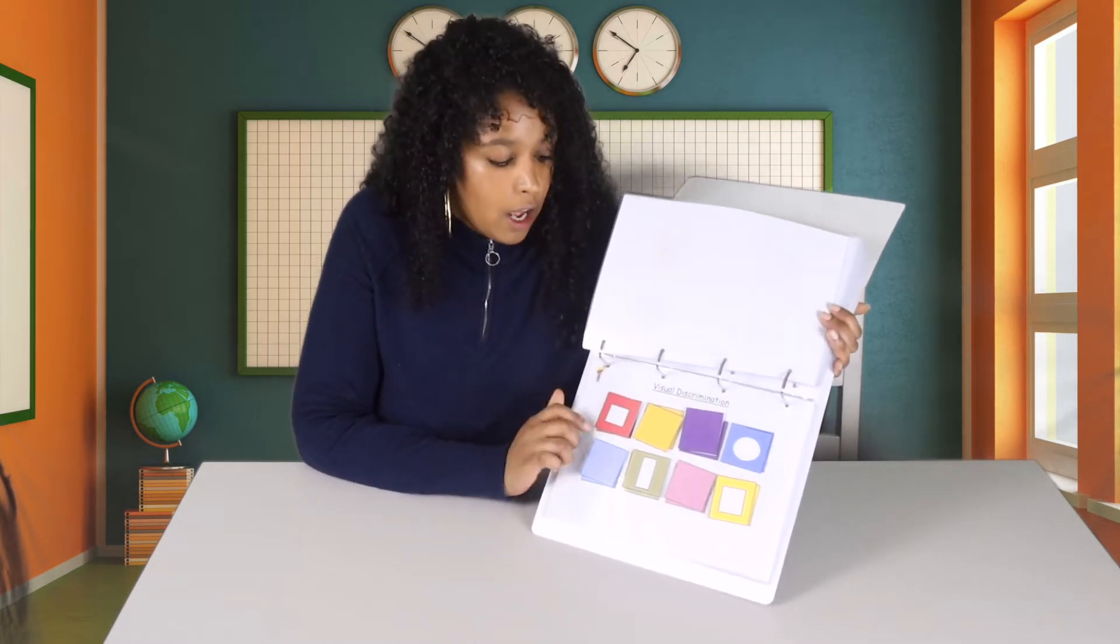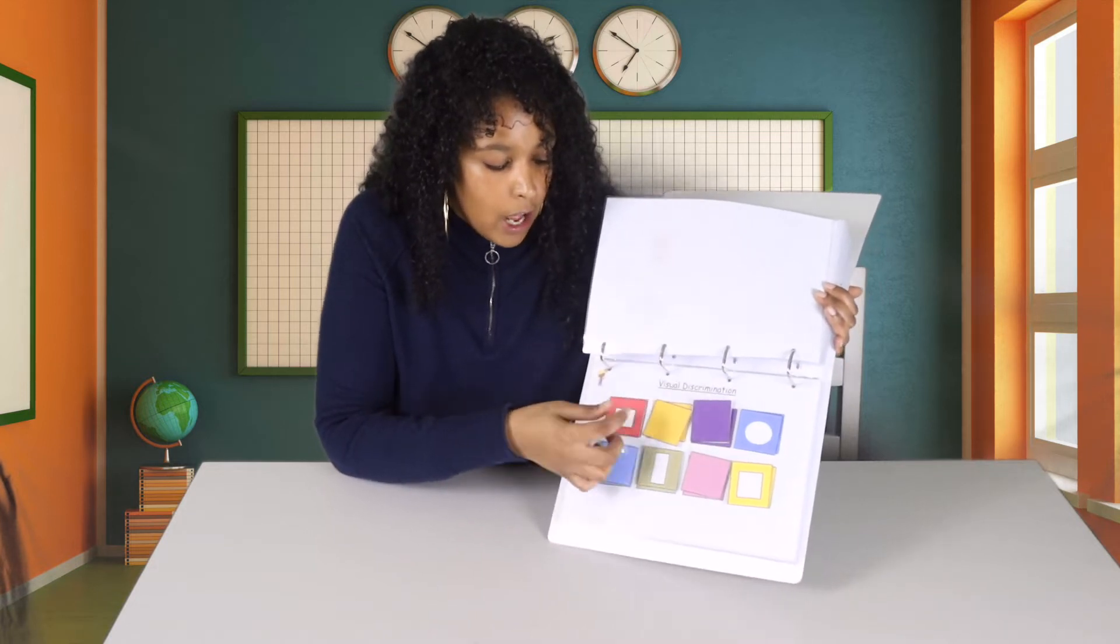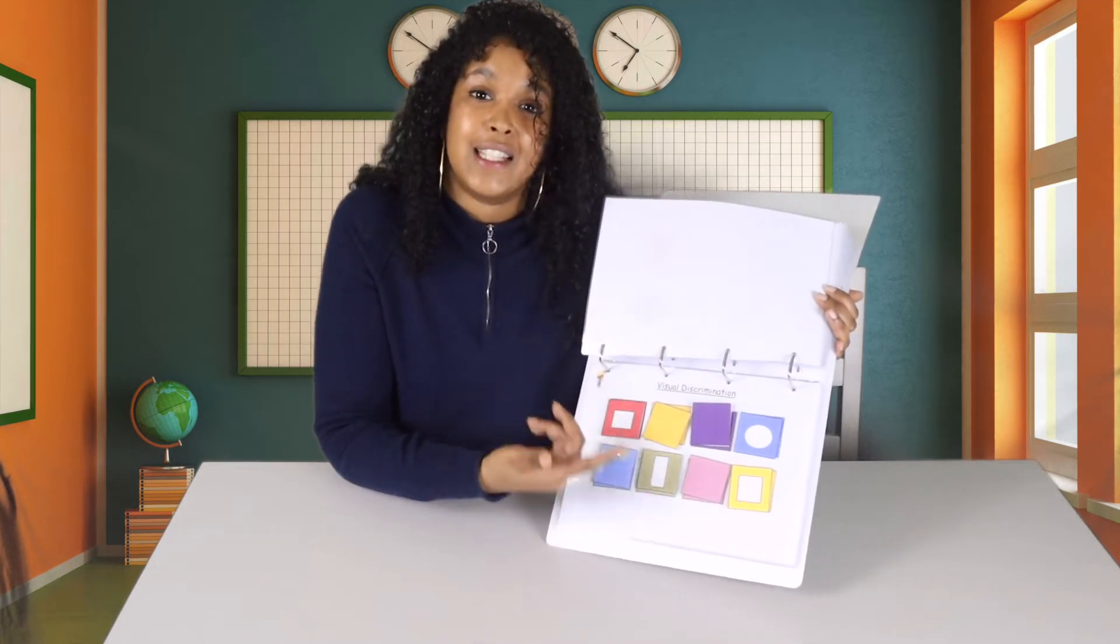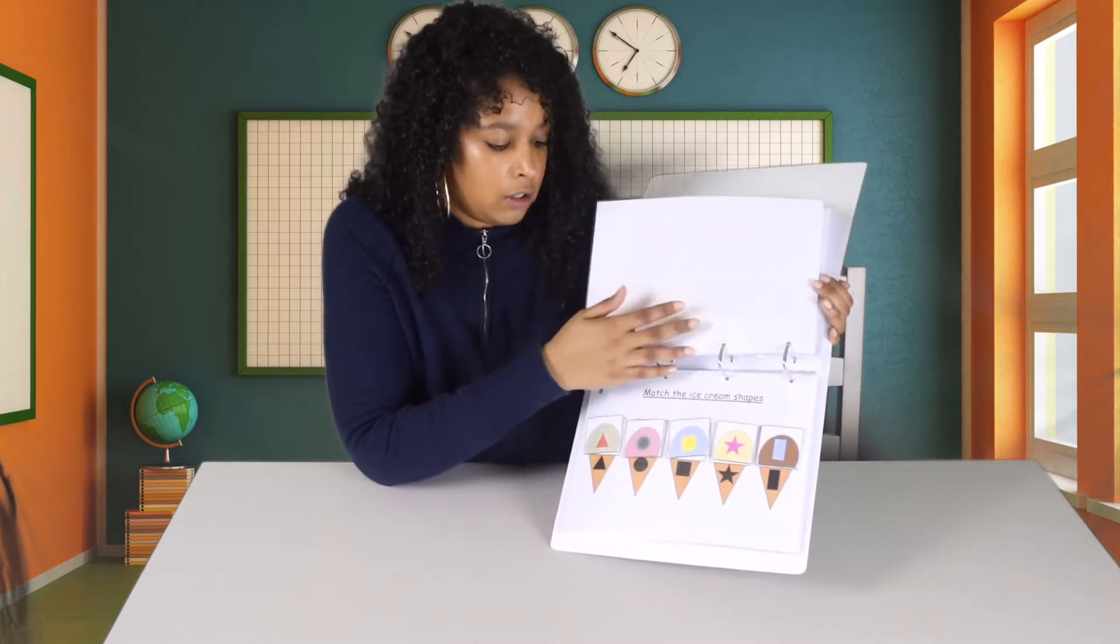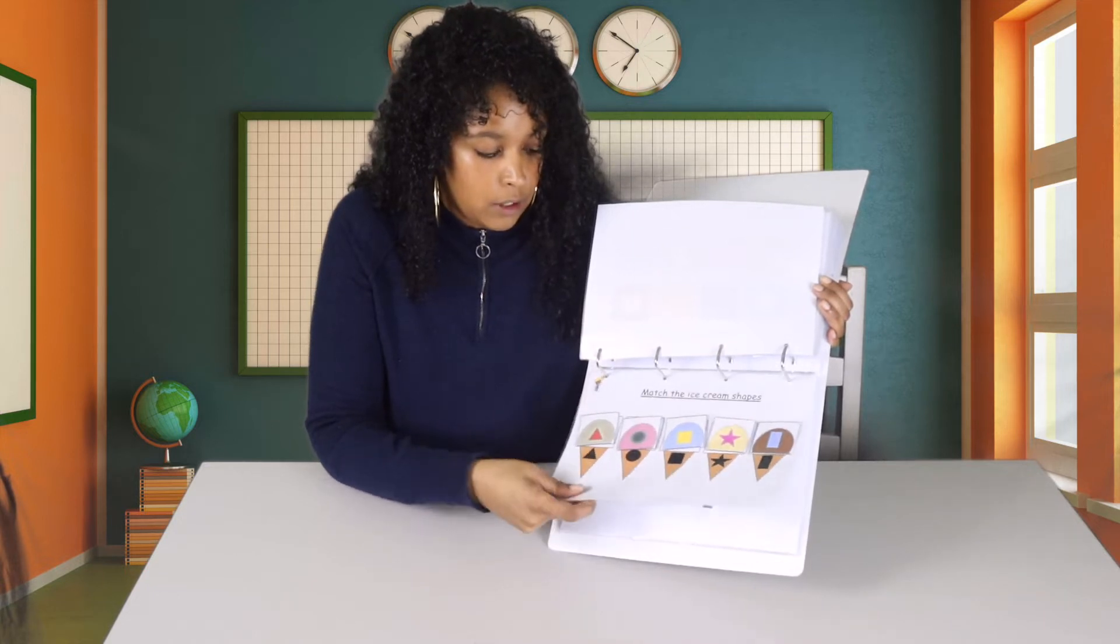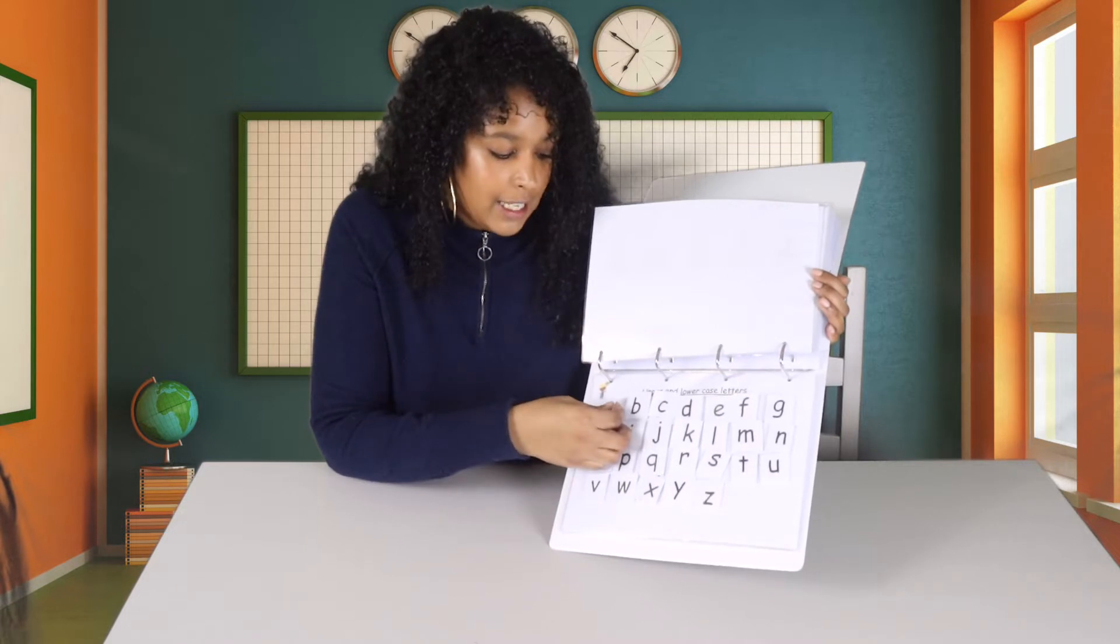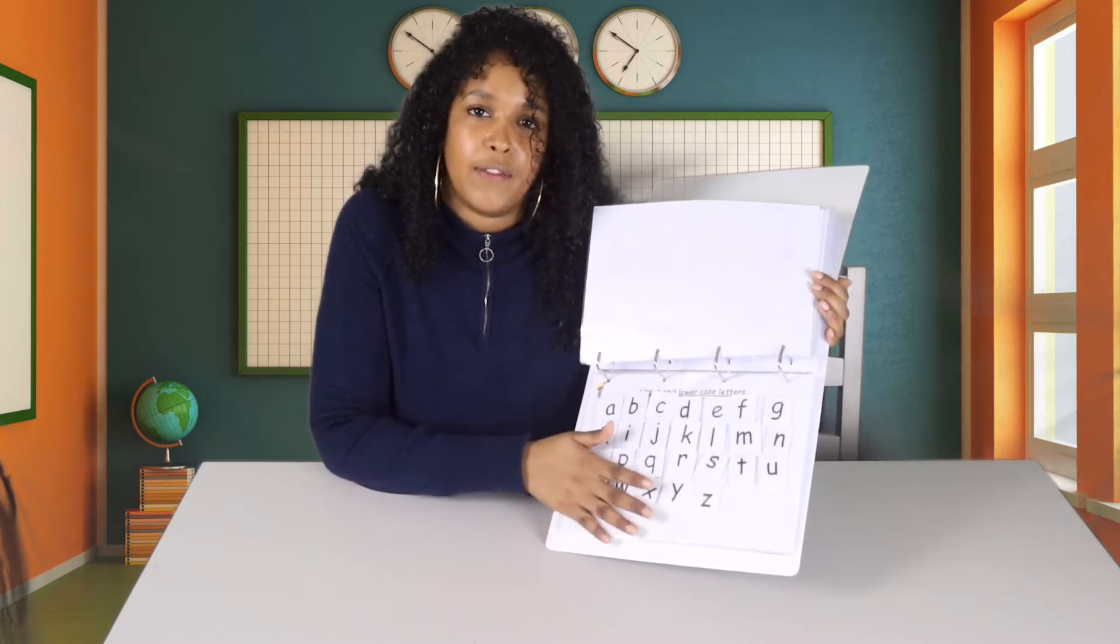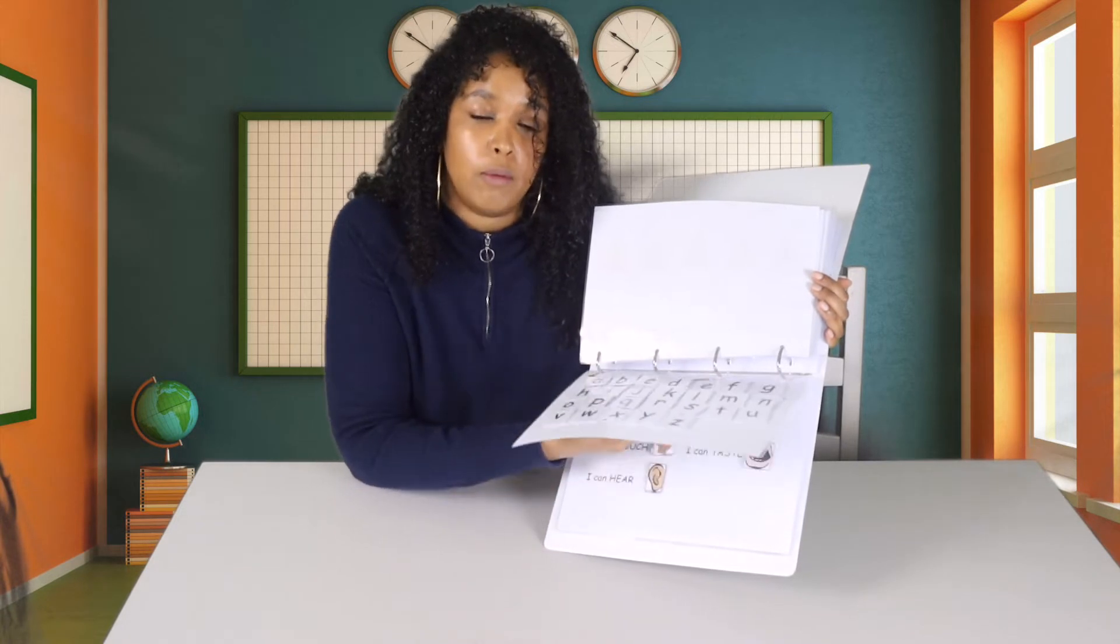So we have A for Alligator, E for Elephant, I for Igloo and O for Octopus. Some more matching. This is colours again, but slightly different. He spoke about the shapes that are inside of the squares. Which was quite interesting. Some more matching with ice cream cones. We have upper and lowercase, as just mentioned. It's something that we are definitely working on with Amari. So I've added quite a few pages that help reinforce that.